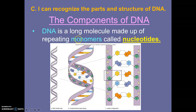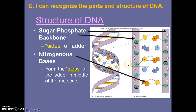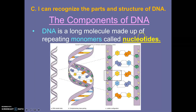DNA is a long molecule made of repeating monomers called nucleotides. A nucleotide has three different parts: a phosphate — that's part number one — a sugar, part number two, and a base. Those three parts together, all attached, make a nucleotide — that's what we call the monomer. All of the nucleotides on both sides join together to form your two strands of DNA.